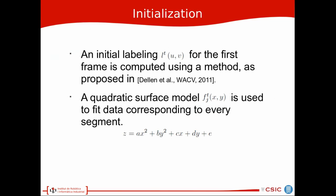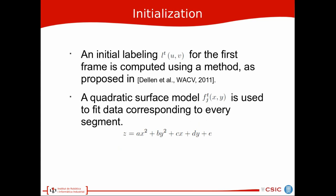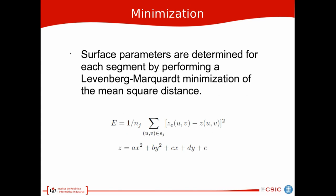An initial labeling for the first frame is computed using a method proposed earlier. A quadratic surface model is used to fit data corresponding to every segment. So basically what we are doing is that we are determining these five model parameters A, B, C, D and E such that the average distance between the estimated depth and the predicted depth is minimized.